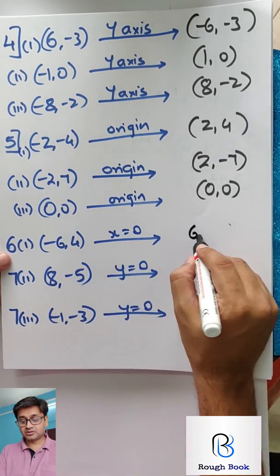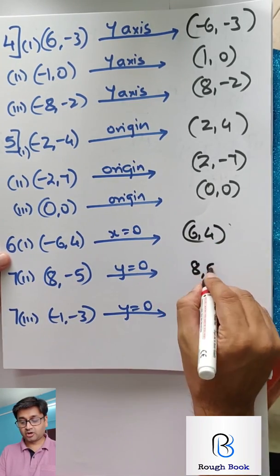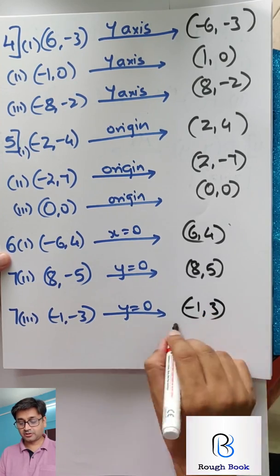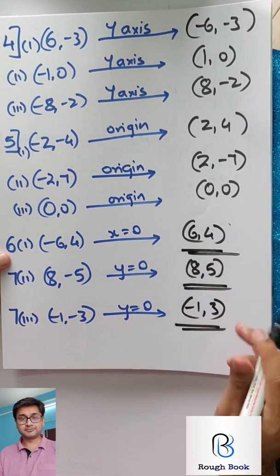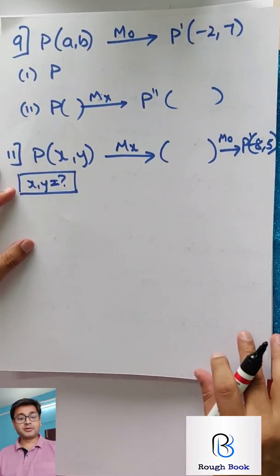So x is equal to zero means y-axis, that means you are going to change x. In other words, x is equal to zero means change x. Y is equal to zero means change y. So x-axis I will change, so 6 comma 4. Y-axis I will change, so 8 comma 5. Y-coordinate I will change, so minus 1 comma 3. Was this very simple? Great.